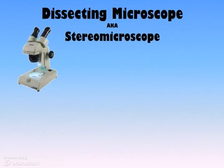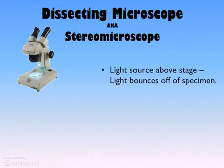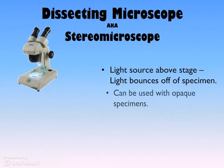Another type of compound light microscope is the dissecting microscope or the stereomicroscope. It is a light microscope — it does shine light — but this one, instead of shining through a really thin specimen, it actually bounces the light off of the surface of the specimen. Since we're only looking at the surface, we can look at opaque specimens and really thick sections.